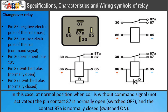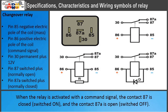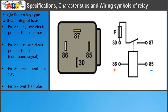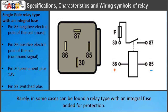Changeover relay: at normal position when the coil has no command signal, contact 87a is normally open and contact 87 is normally closed. When the relay is activated with a command signal, contact 87a is closed and contact 87 is open. Rarely, in some cases a relay type with an integral fuse can be found, added for protection.